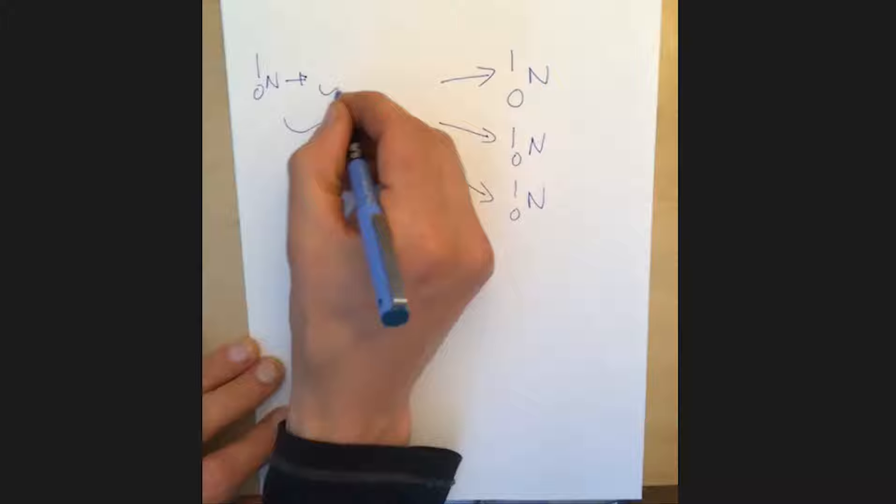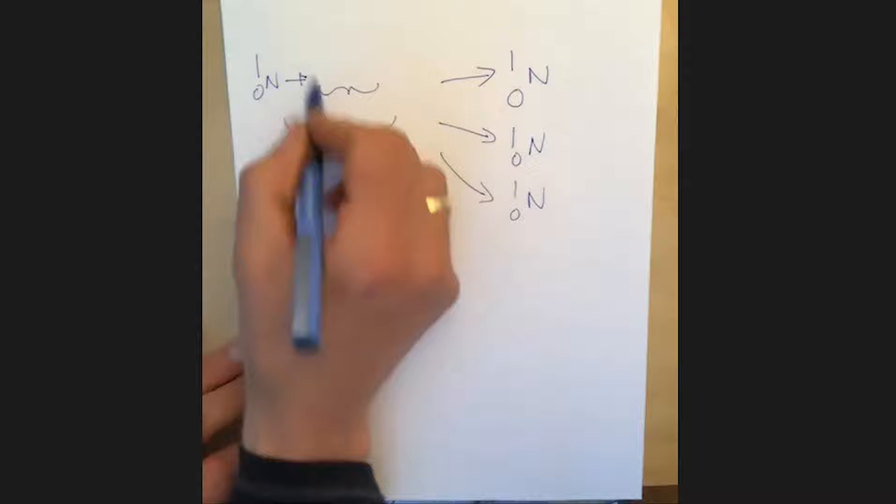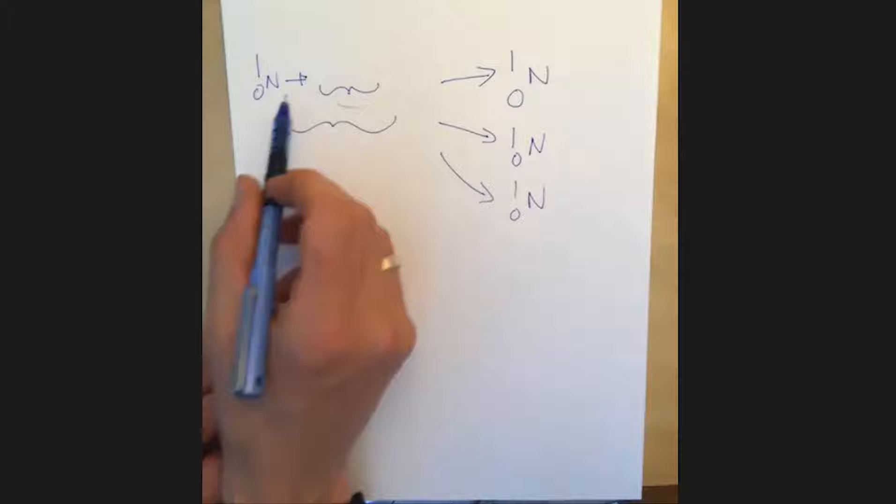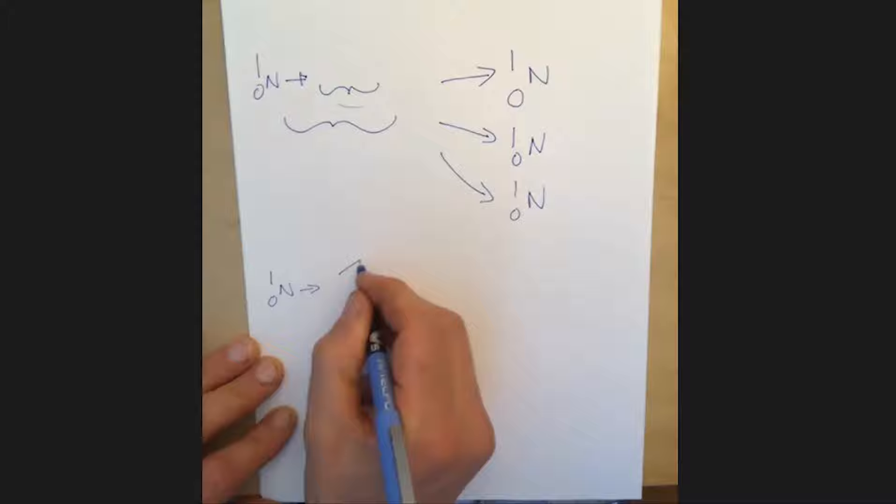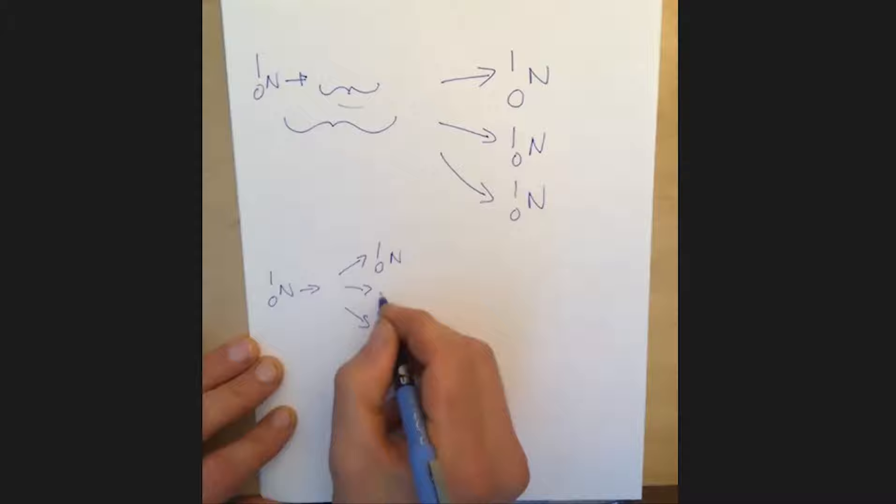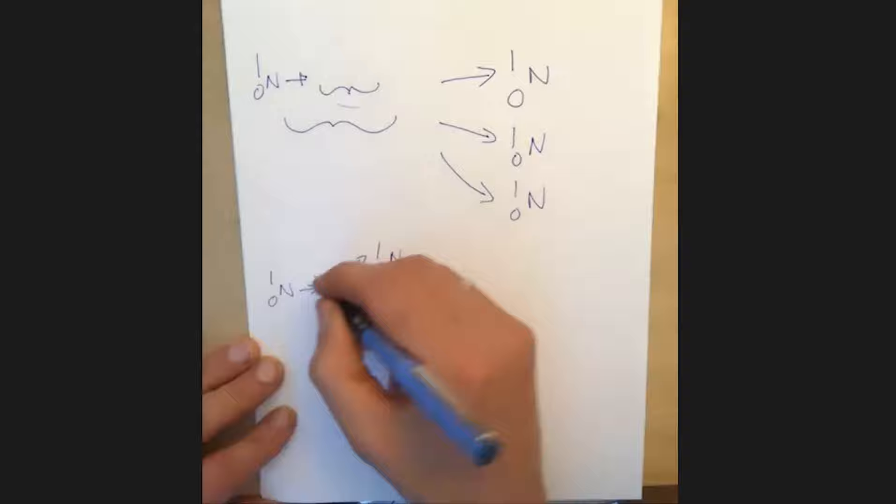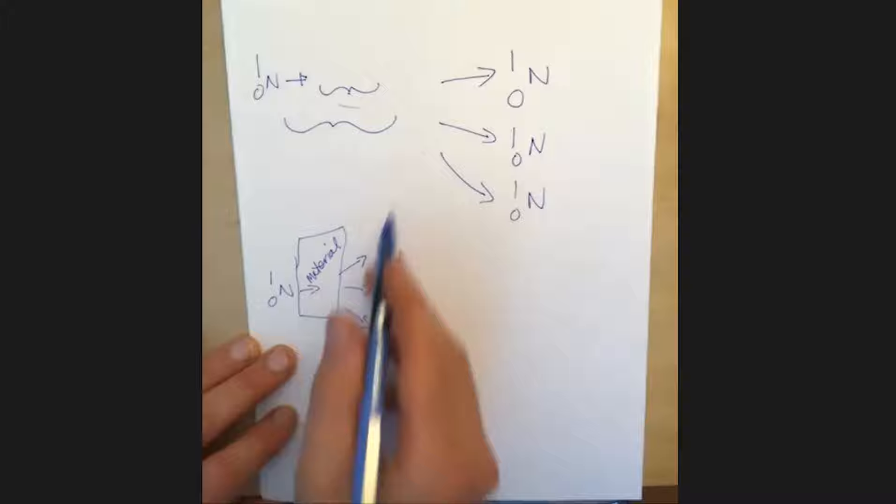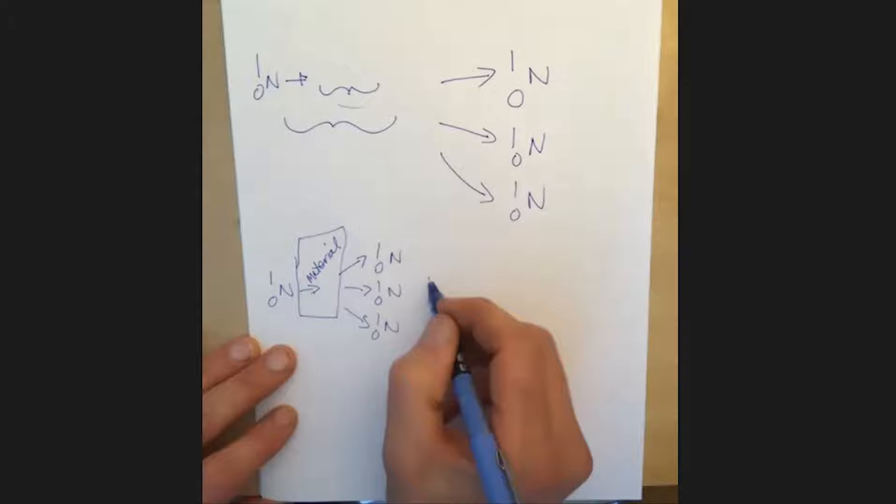When that happens, this atom splits into two other products and three neutrons. Those neutrons are then available to hit whatever this compound was. So it goes from one neutron hitting, splitting, and producing three neutrons. There's radioactive material here that splits into two other products and three neutrons, and then these three neutrons are available to hit more of this material and produce three more neutrons.